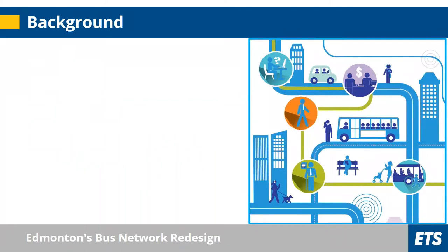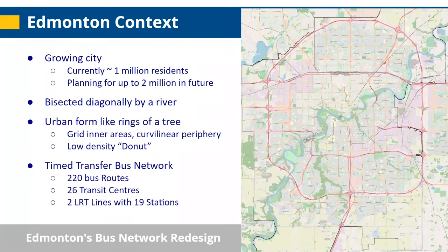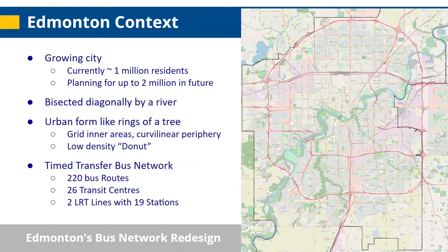Edmonton is currently just under a million people, but we're planning to grow to about twice that in the next 30 to 50 years. We're diagonally bisected by the North Saskatchewan River, which only has a handful of bridges, limiting our ability to connect the two sides. Our urban form is like the growth rings of a tree — the inner areas have a grid pattern with some density, and each concentric ring becomes more curvilinear, resulting in a donut-shaped density pattern with a dense core, some density in outer areas, and a relatively low-density ring in between.